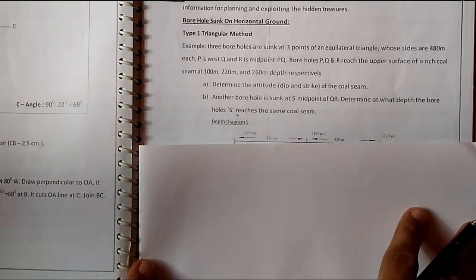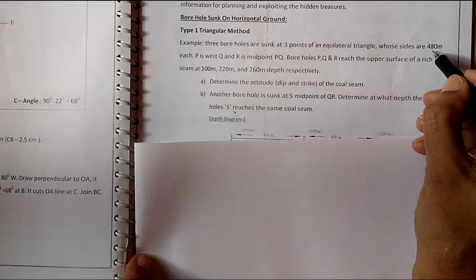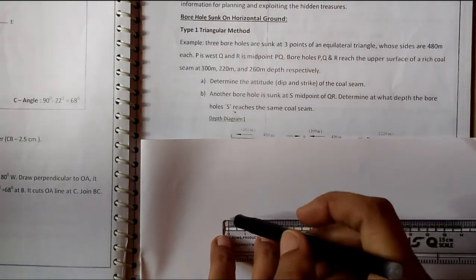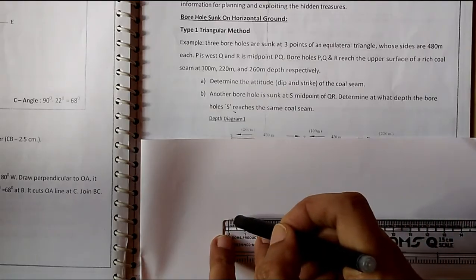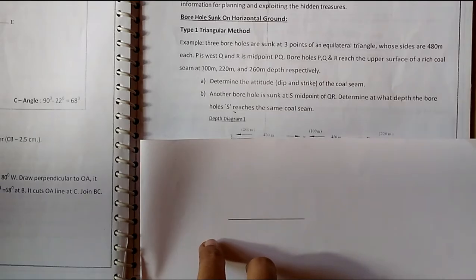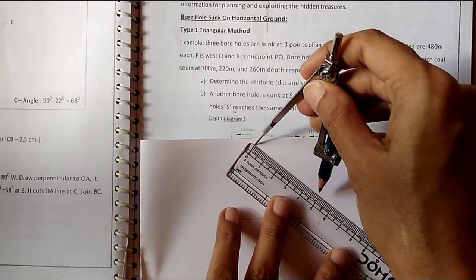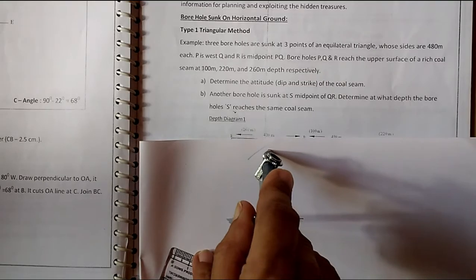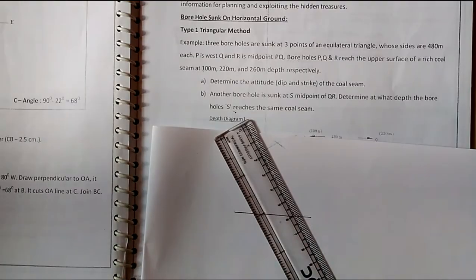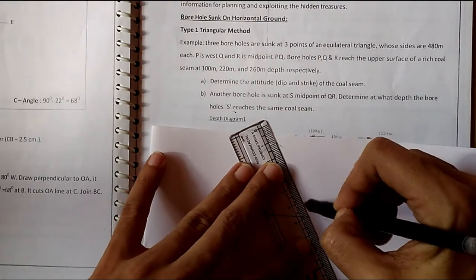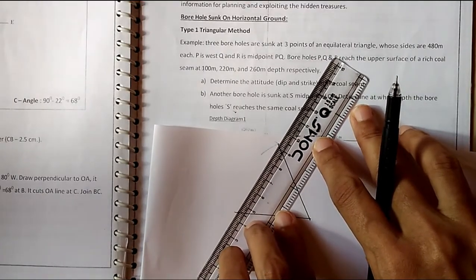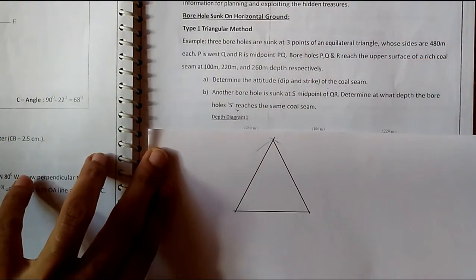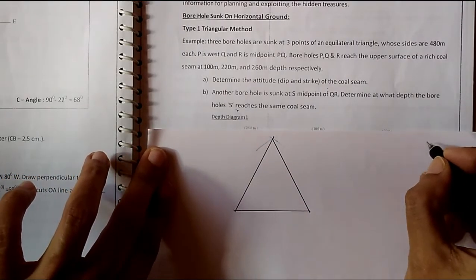As per the data given in the question, we have to draw an equilateral triangle with dimensions of 480 meters each. We mark 480 meters as 4.8 centimeters on our scale and construct the equilateral triangle accordingly. The construction of the equilateral triangle is now complete.